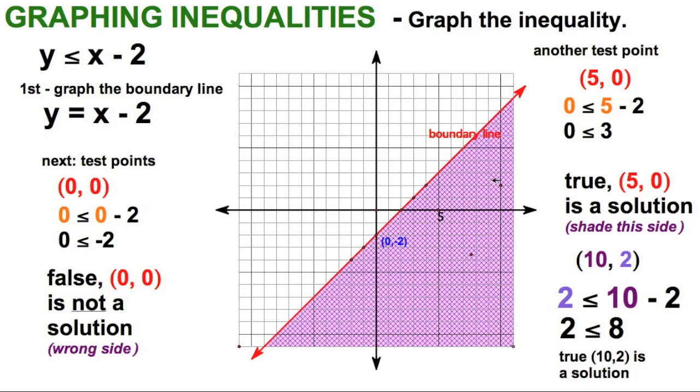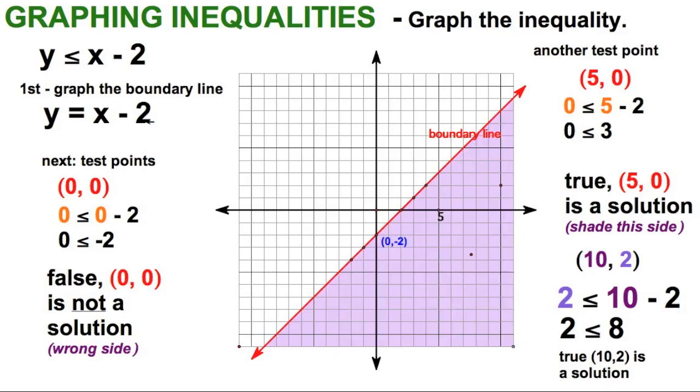So all the values in this shaded region, this side and including the boundary line, are all solutions to this inequality.